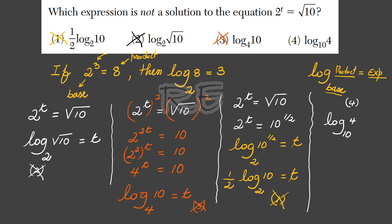Now we only have option 4 left, and we're going to show that log base 10 of 4 is not a solution. If it was a solution, log base 10 of 4 would equal t. Therefore, 10 to the t would equal 4. Our exponential form is 2 to the t equals square root of 10. So 10 to the t equals 4 is not a solution. The correct answer is 4.